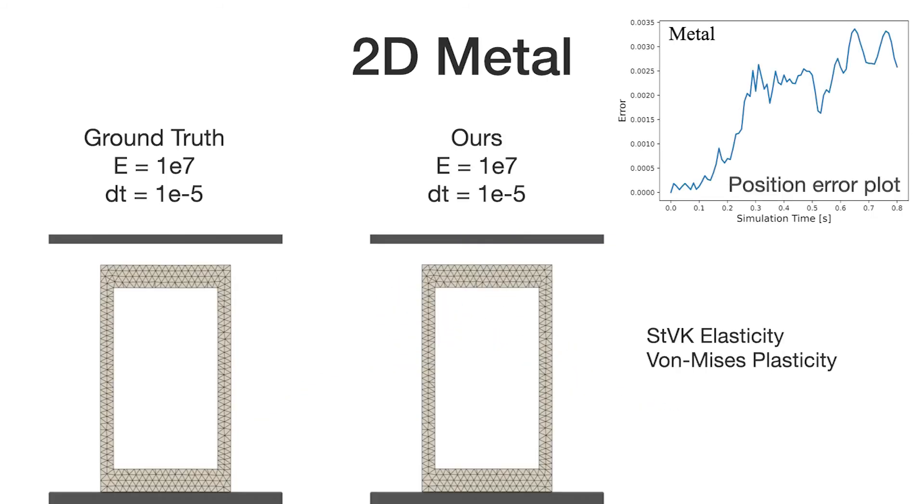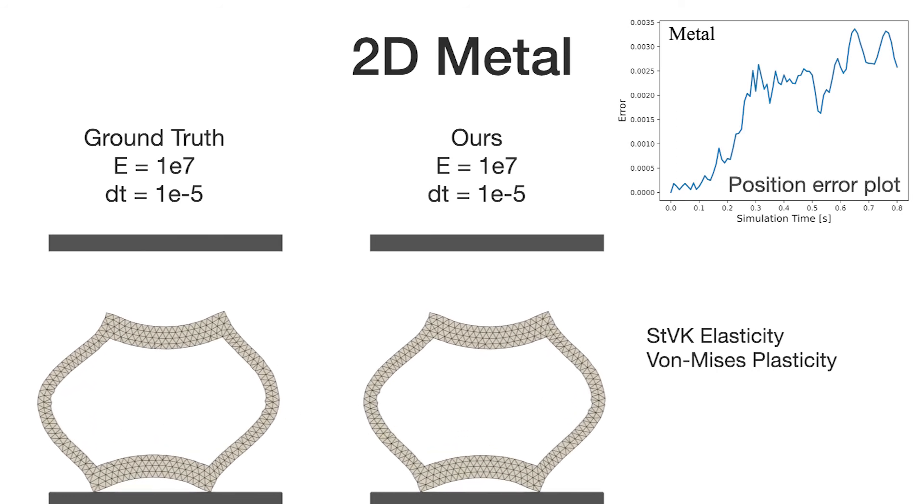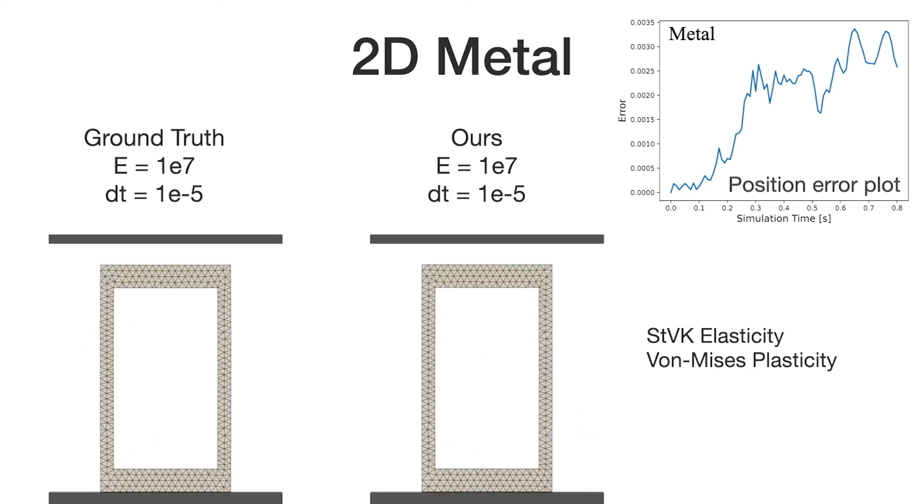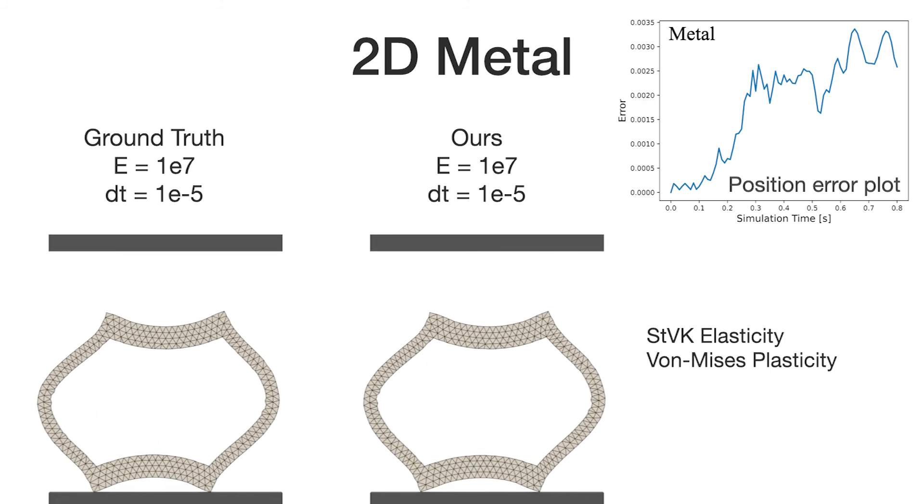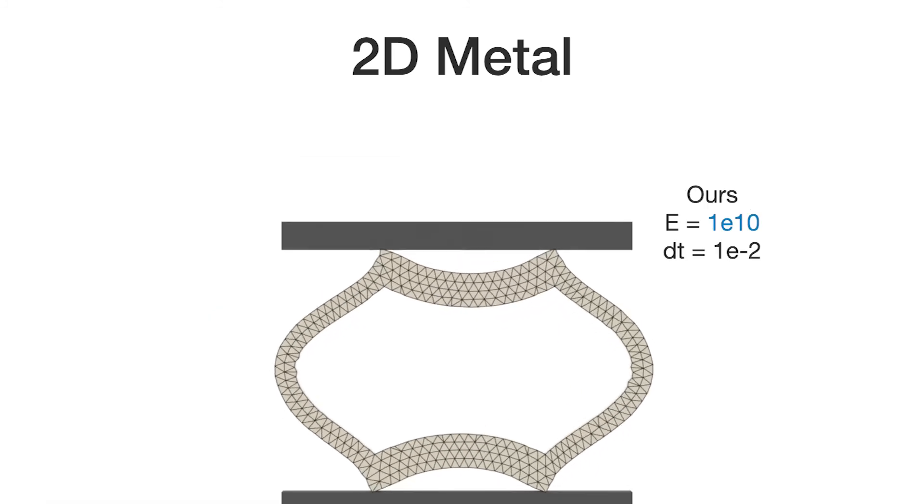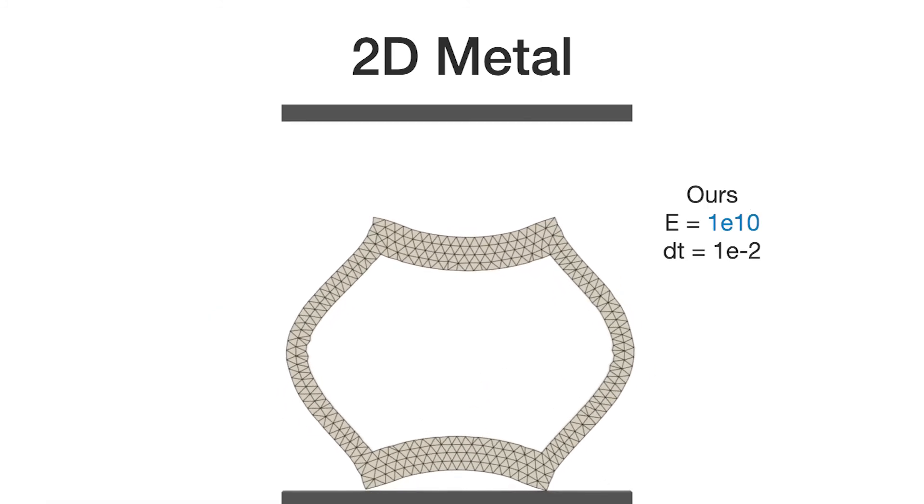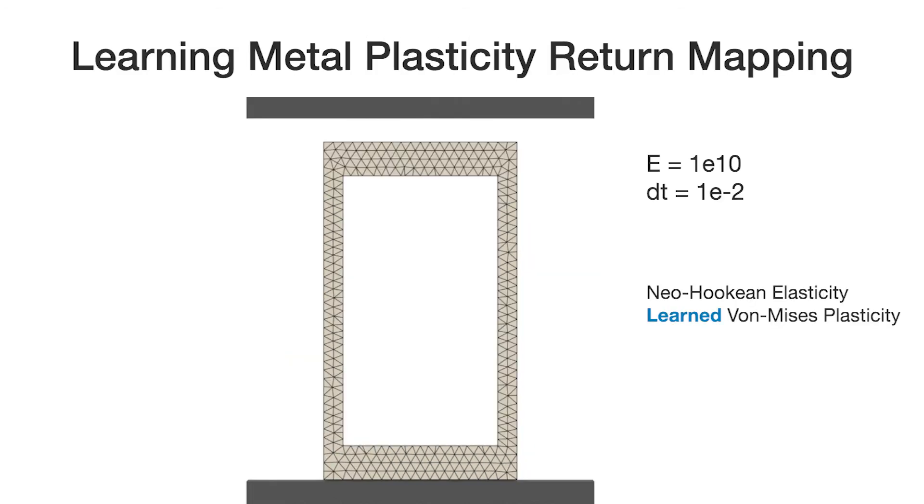We simulate a metal frame compressed by a rigid plate in FEM. Young's modulus is decreased in the comparison experiment with the ground truth to stabilize the explicit time integrator. However, our method is still stable with a much stiffer setting and a much larger time step size.